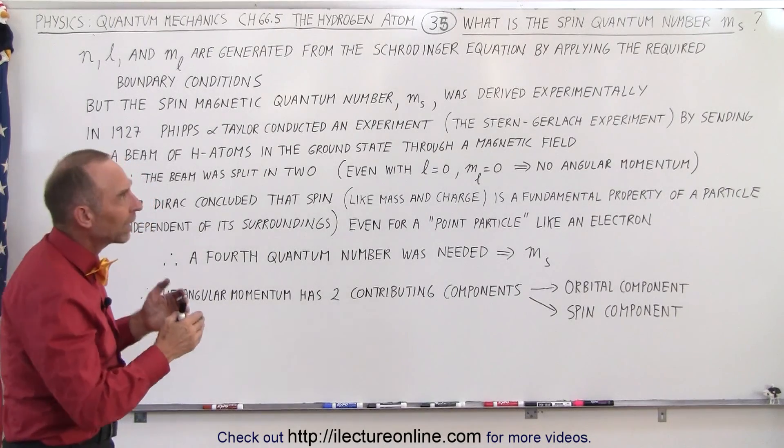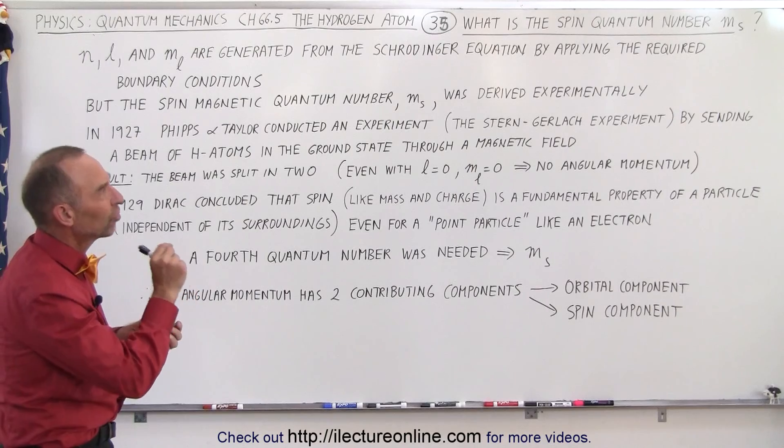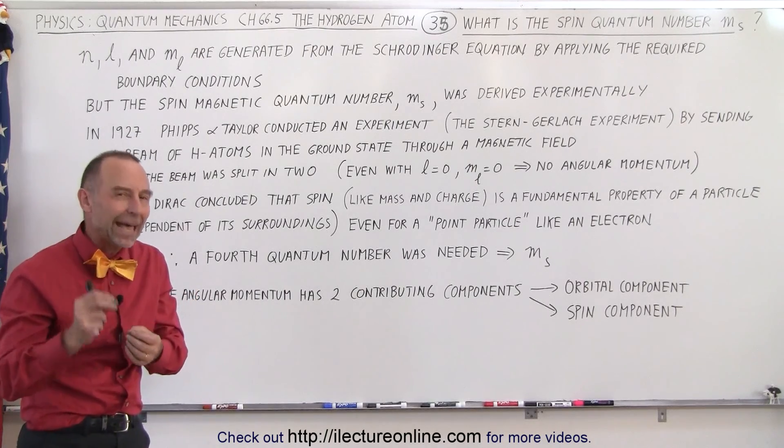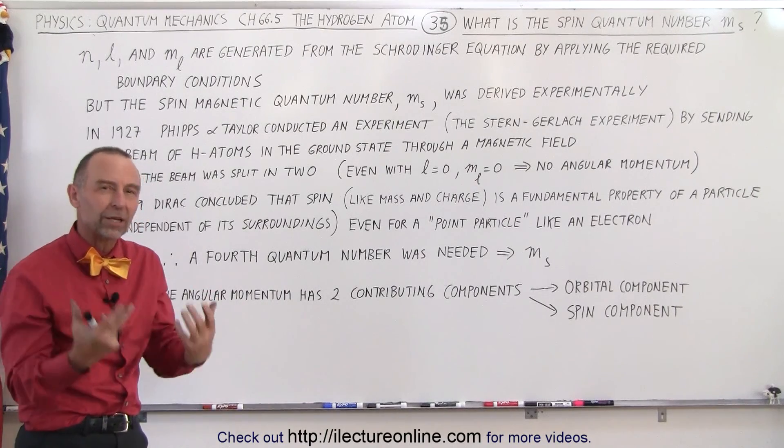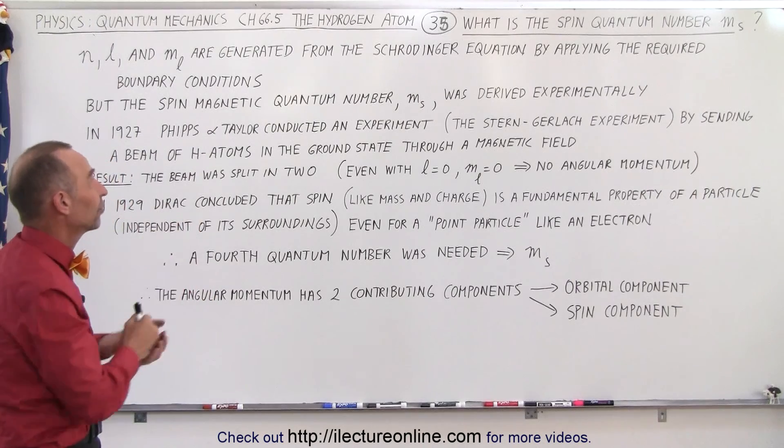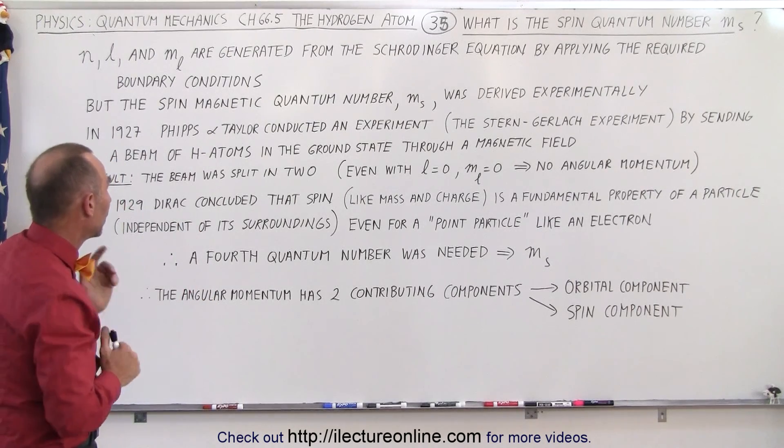But we know that the fourth quantum number is called the spin quantum number, written as M sub S. So what is it and where did it come from? Well, it certainly did not come from the Schrodinger equation. Well, it turns out,